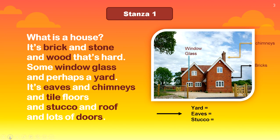Stanza one. What is a house? It's brick and stone and wood that's hard, some window glass and perhaps a yard. It's eaves and chimneys and tile floors and stucco and roof and lots of doors.